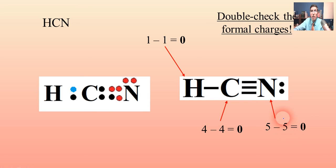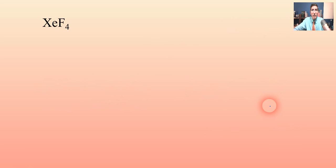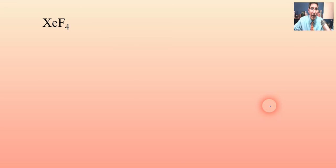We have all zeros, so that's good — that's what you want. We can be fairly assured this is the best Lewis electron dot diagram for that molecule. Now sometimes we have to break the octet rule; sometimes there's just no way around it.